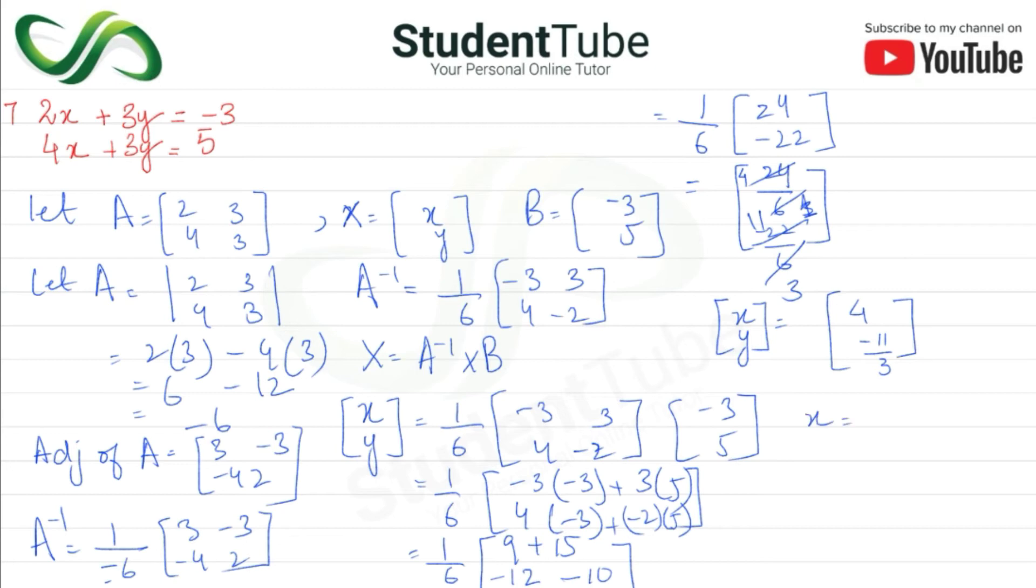On equating, x is equal to 4 and y is equal to minus 11 upon 3. So solution set kya bana? 4 minus 11 upon 3. Okay?